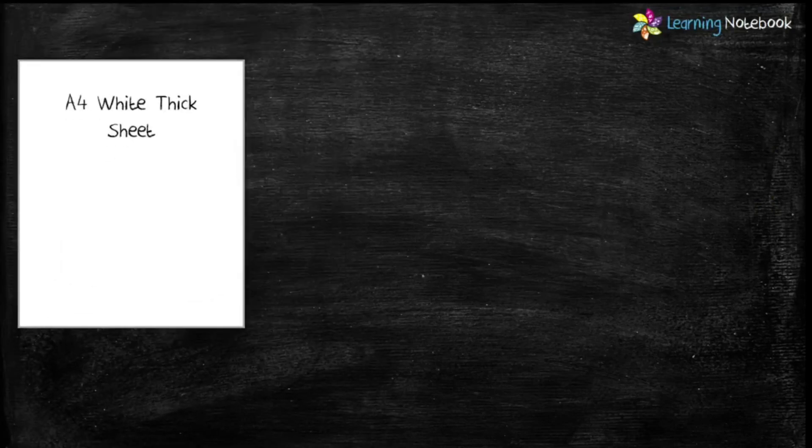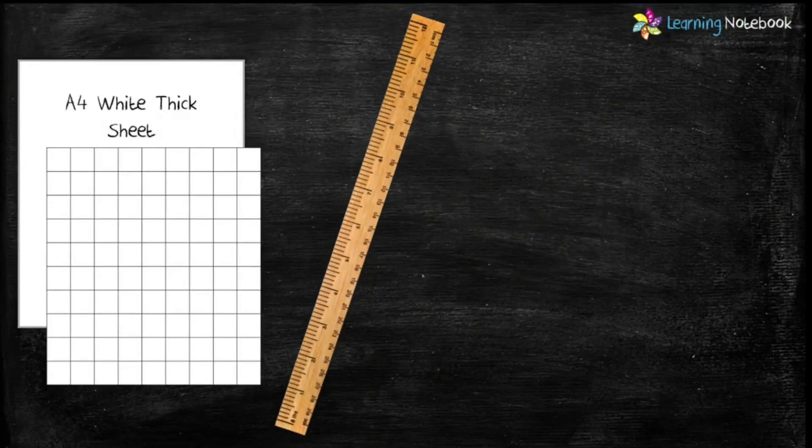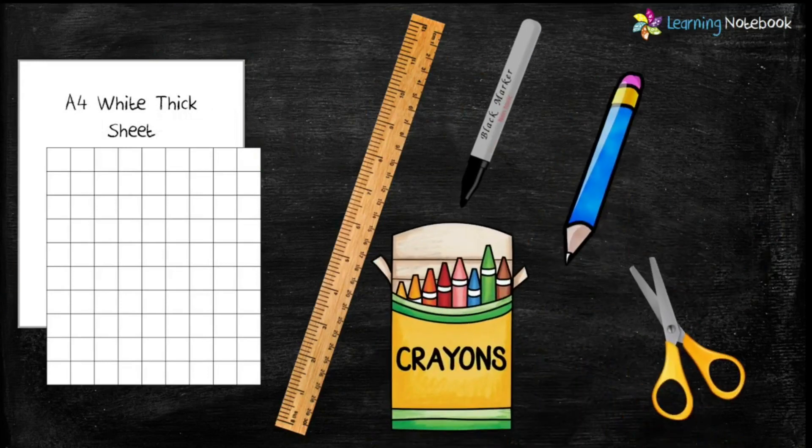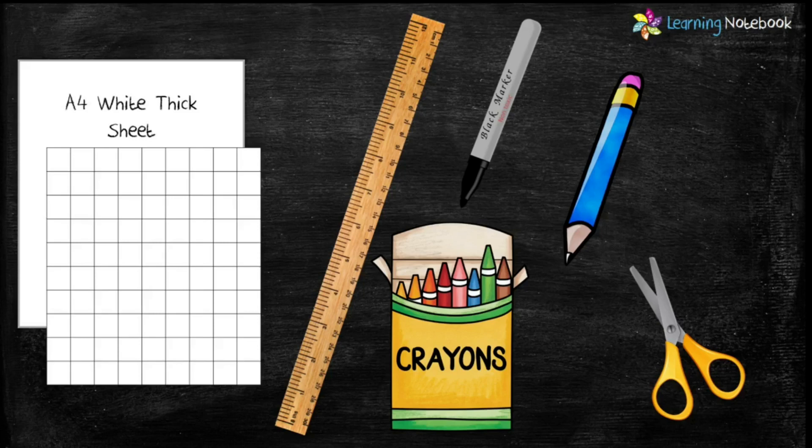For this activity, we need one A4 white thick sheet, a grid sheet, a ruler, a black marker pen, a pencil, few crayons and a pair of scissors.